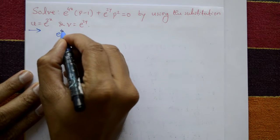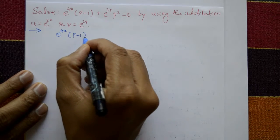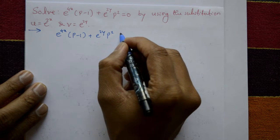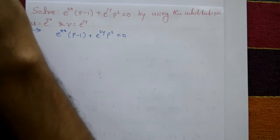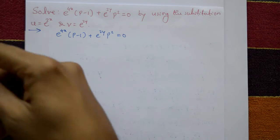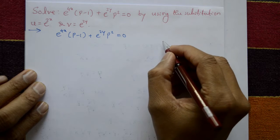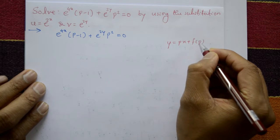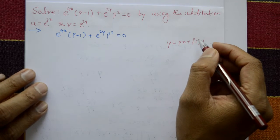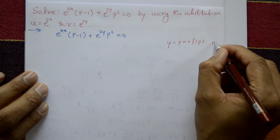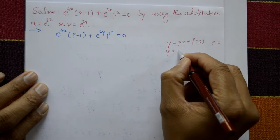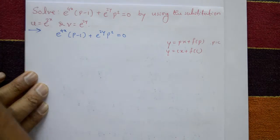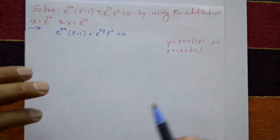Given equation: e raised to 4x into p minus 1 plus e raised to 2y into p square is equal to 0. First, reduce this equation into Clairaut general form. Clairaut general form is y equal to px plus f of p. Then put p equal to c, giving y equal to cx plus f of c. This is the general solution of the Clairaut equation.